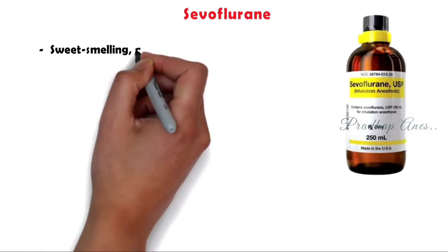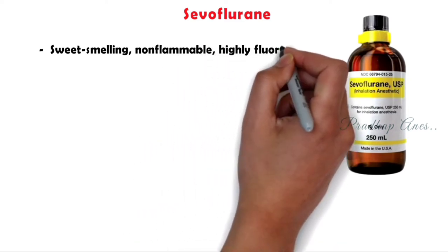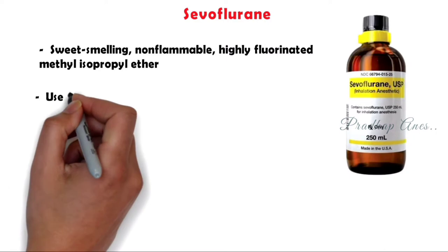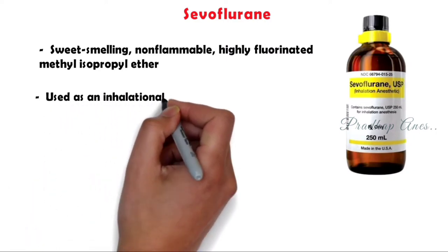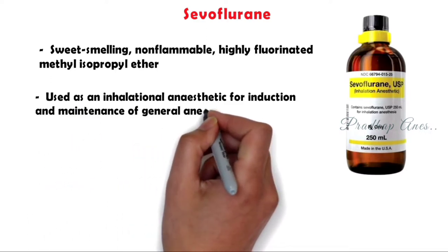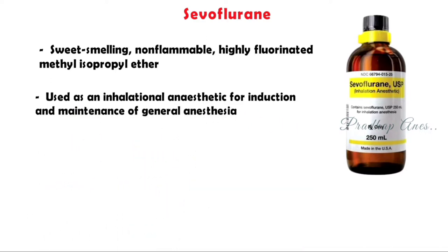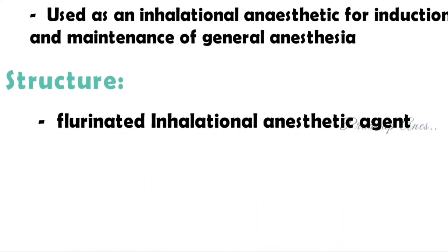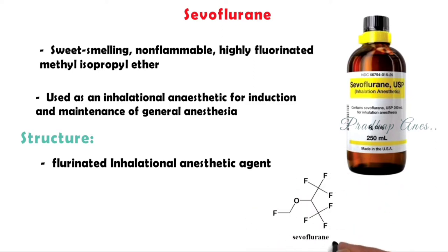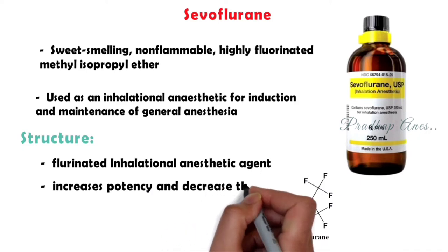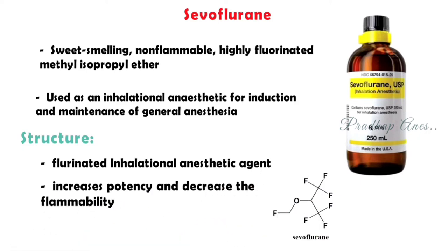Sevoflurane is a sweet-smelling, non-flammable, highly fluorinated methyl isopropyl ether. It is used as an inhalational anesthetic for induction and maintenance of general anesthesia. Sevoflurane is a fluorinated inhalational anesthetic agent with a maximum number of fluorine atoms. This fluorination increases potency and decreases flammability, making it non-flammable.